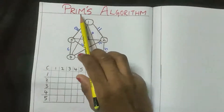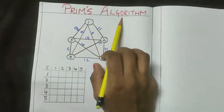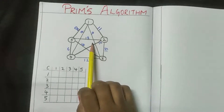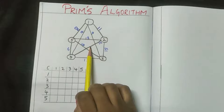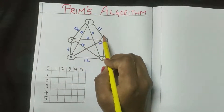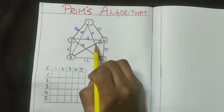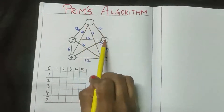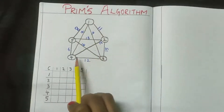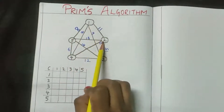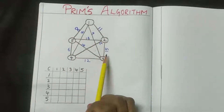Hello guys, today we'll be learning about Prim's algorithm. This is the graph provided to us. This graph is an undirected graph, meaning there are no arrows given. If there was an arrow, that would be a directed graph. Here, nodes one, two, three, four, and five are your nodes, and edges like one-two, two-two, two-three are called edges.